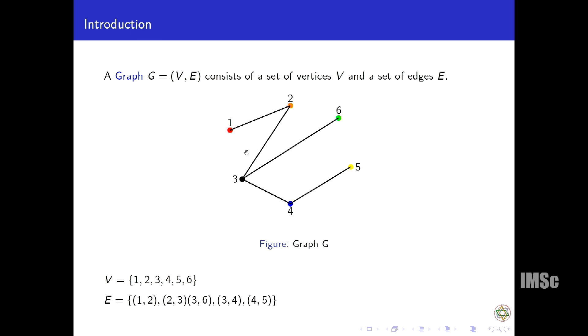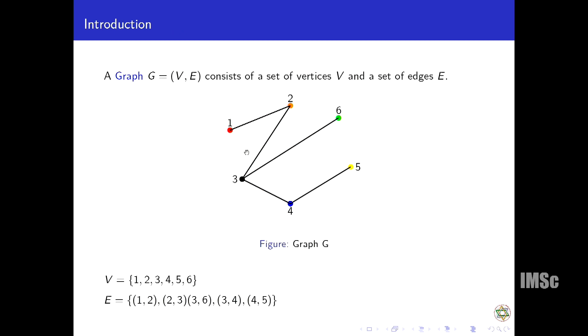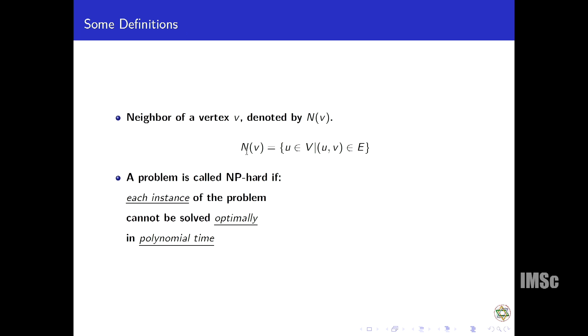For this graph, the vertices are one, two, three, four, five, six, and this is my edge set. Edge is written as an ordered pair of two vertices. Now let us define some notions which I need for defining my problem. Neighbor of a vertex: if I look at one, one is adjacent to only two, so two is a neighbor of one. Similarly, if we say neighbor of three, two, six, and four are neighbors of three.